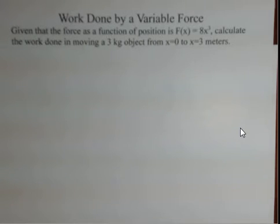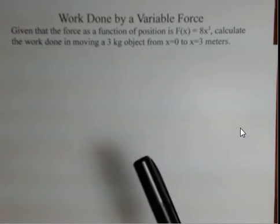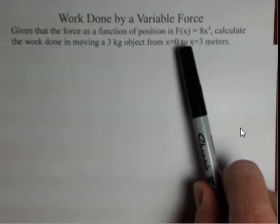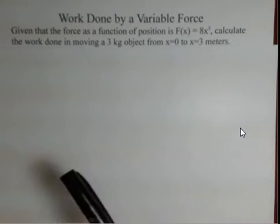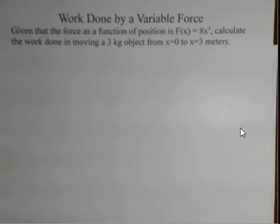We're not allowed to do the calculation of work equals force times displacement if the force is variable. We have to use the tools of calculus to do this. We're going to investigate the situation where the variable force is described as 8x cubed. So as x changes, the force is going to change. We want to let a 3 kilogram object move from x equals 0 to x equals 3 meters.